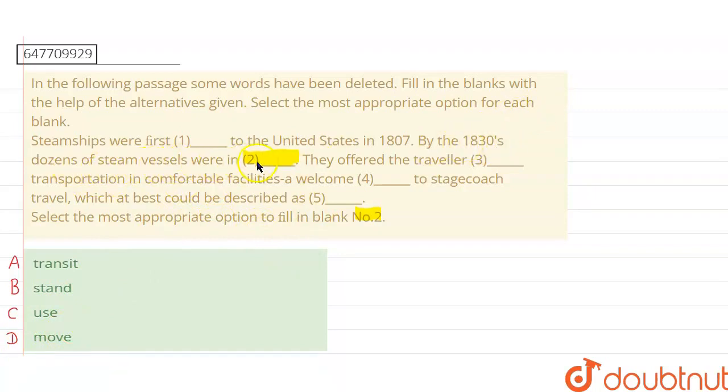Dozens of steam vessels were in [blank] - the options are transit, stand, use, or move. The best option here is 'use'. Talking about the introduction of ships, transit means to carry people or things, which is what ships do.